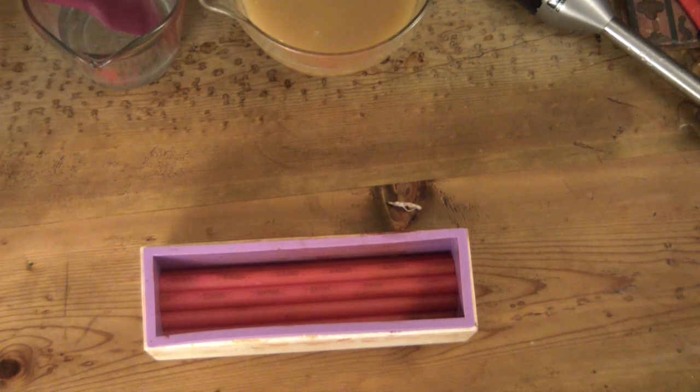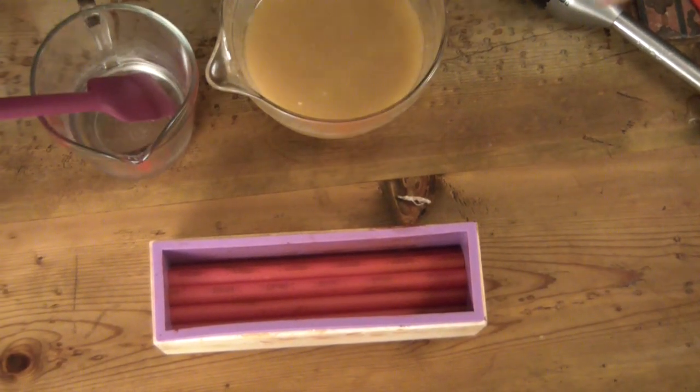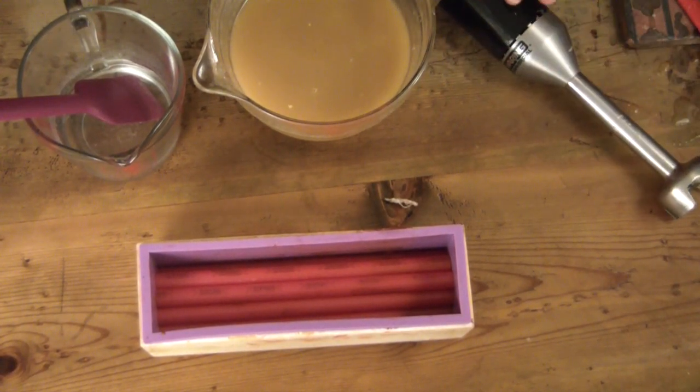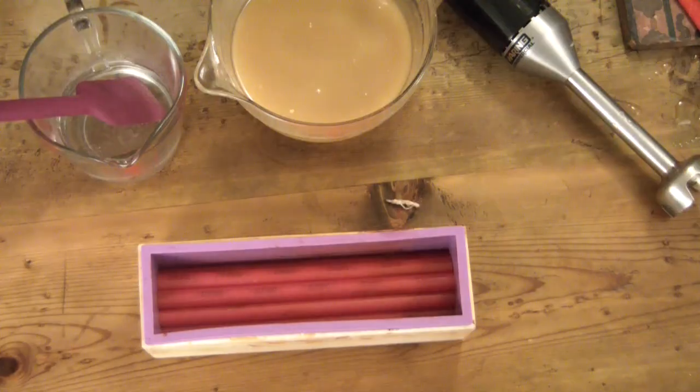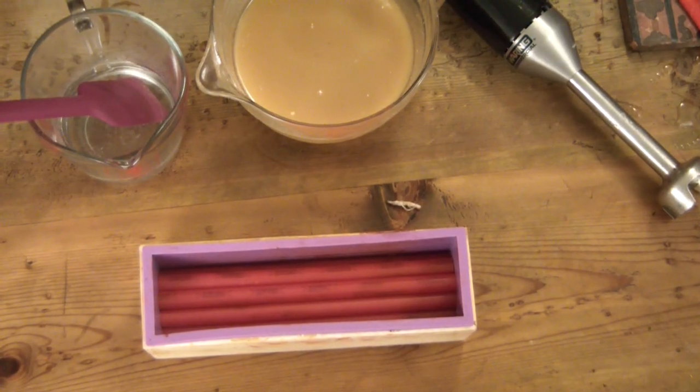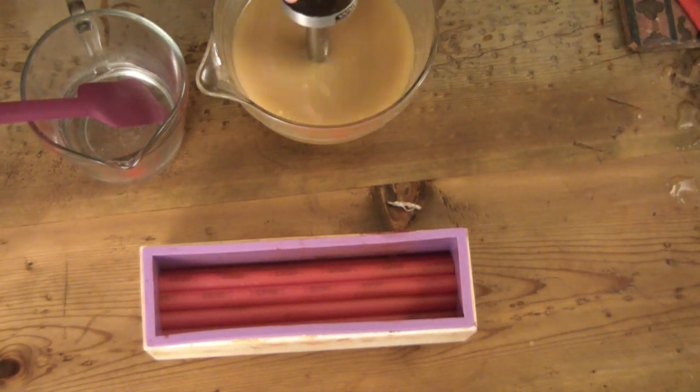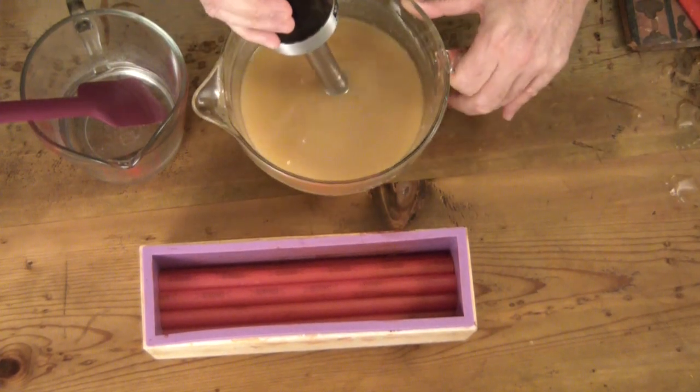By the way, that red that you see spilled on the pipes was some hibiscus that I accidentally splashed. That's what I'm going to be coloring the soap with - hibiscus powder that I made in another video. I just had mixed up some in oil and splashed it all over the place, made a real mess.